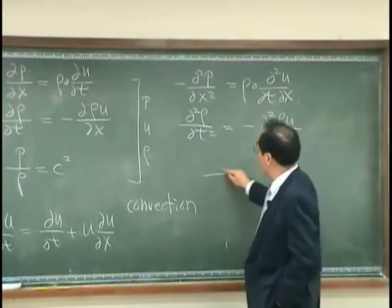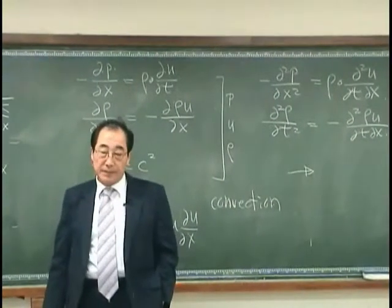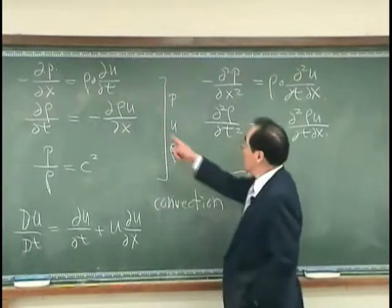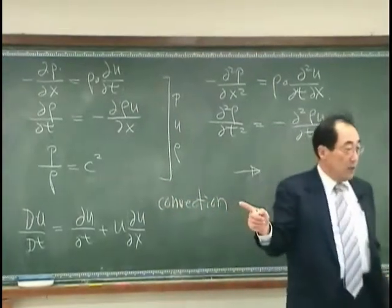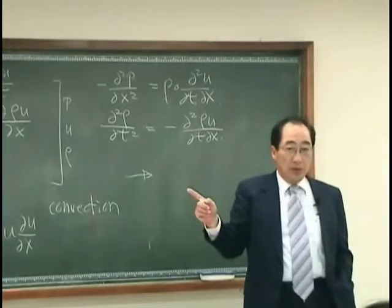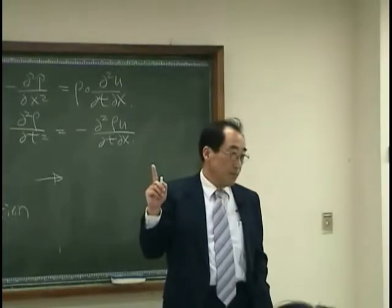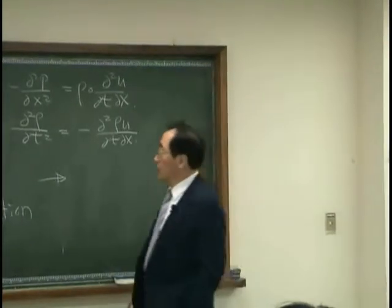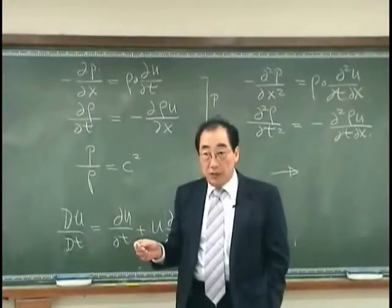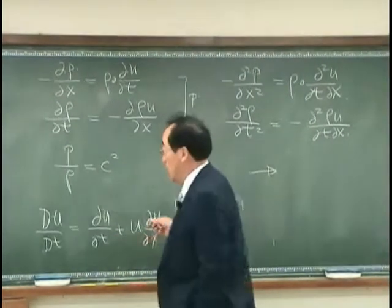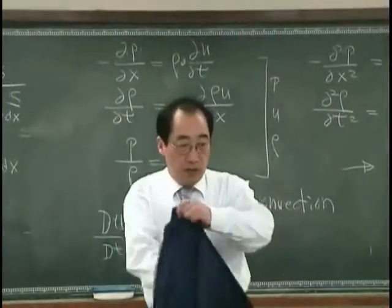And then using this relation, and eliminate this and this, then I can obtain the linearized acoustic wave equation. You may eliminate p and u over here and you will have the wave equation that takes independent variable ρ'. Or you can eliminate p and ρ and then obtain the wave equation with respect to velocity also. But those are related with these three equations, so essentially the same equation. Any questions up to now?